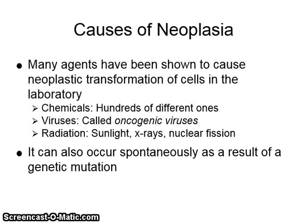Many agents have been shown to cause neoplastic transformation of cells in the laboratory. There are hundreds of different chemicals, oncogenic viruses, and radiation such as sunlight, x-rays, and nuclear fission. It can also occur spontaneously as a result of a genetic mutation.